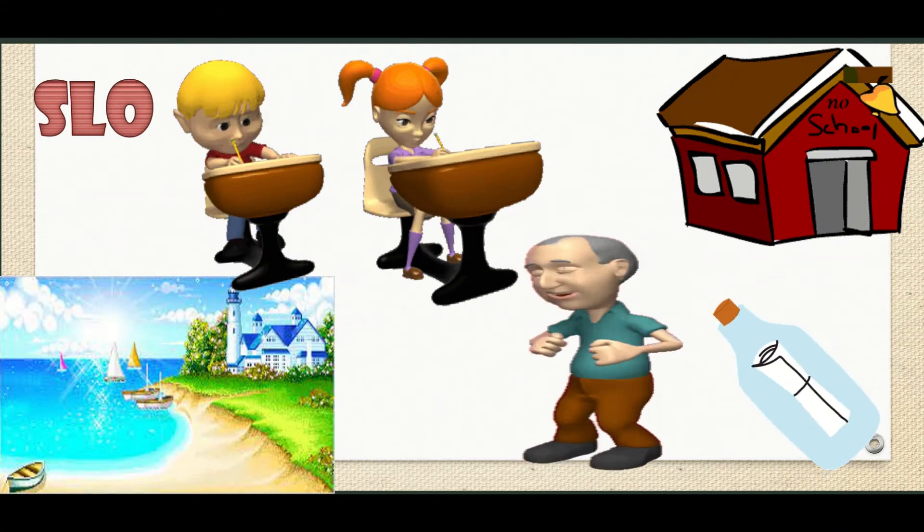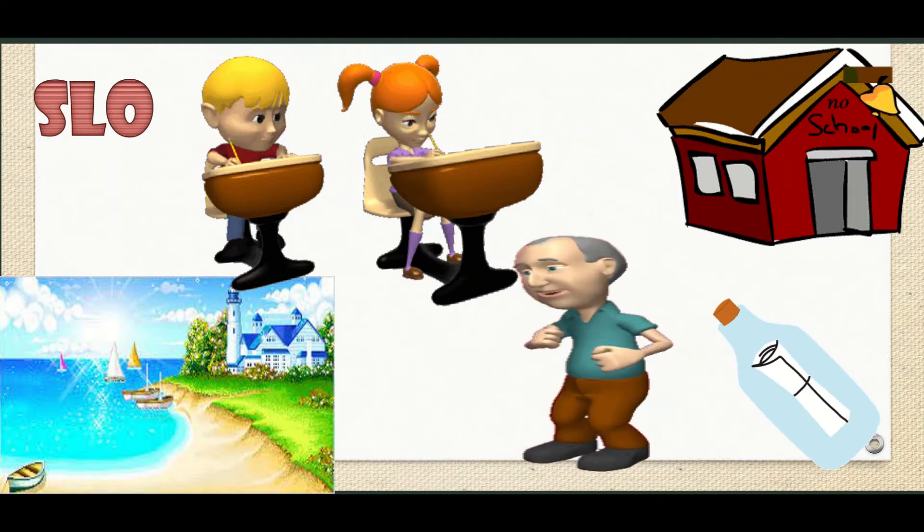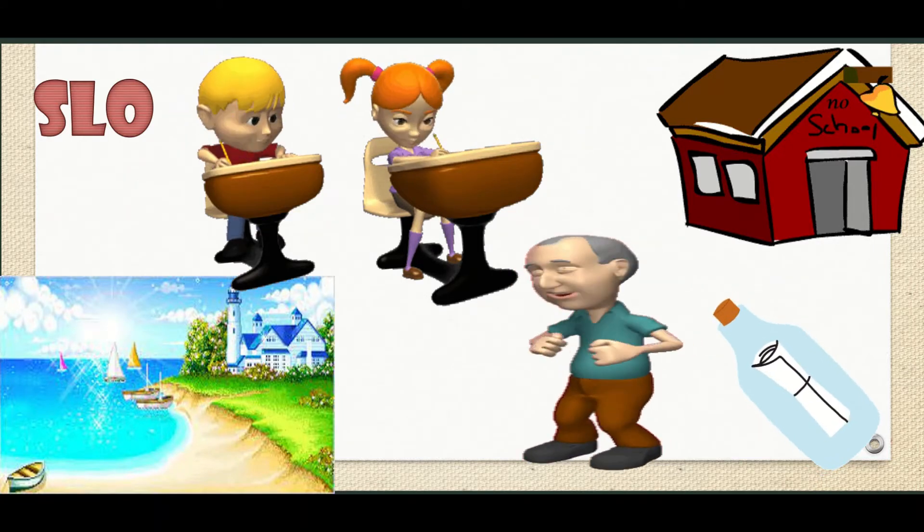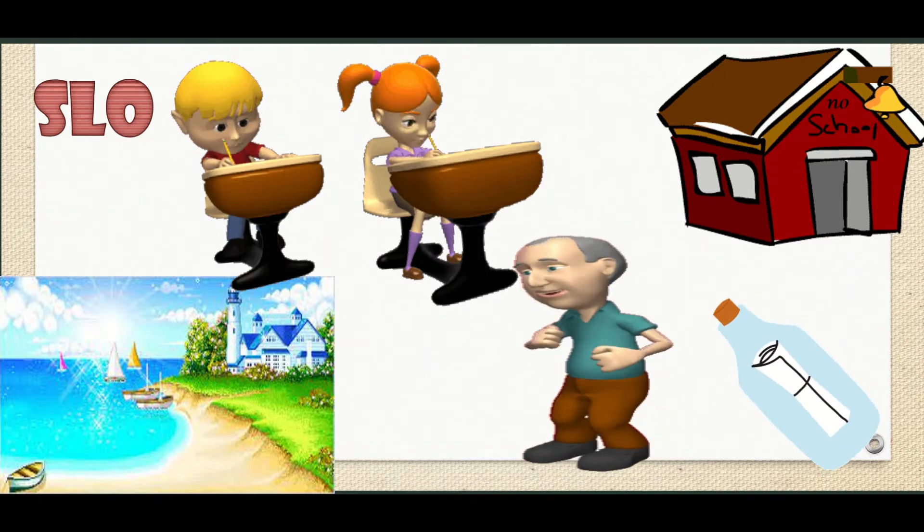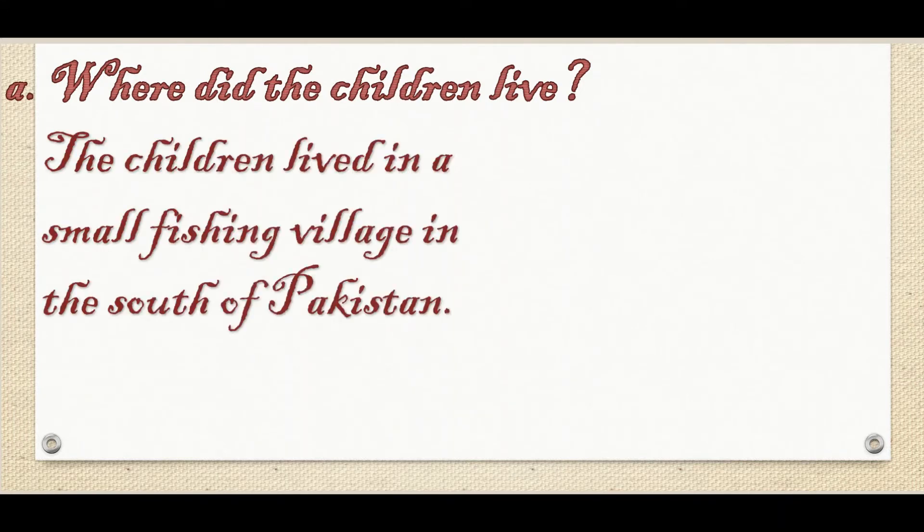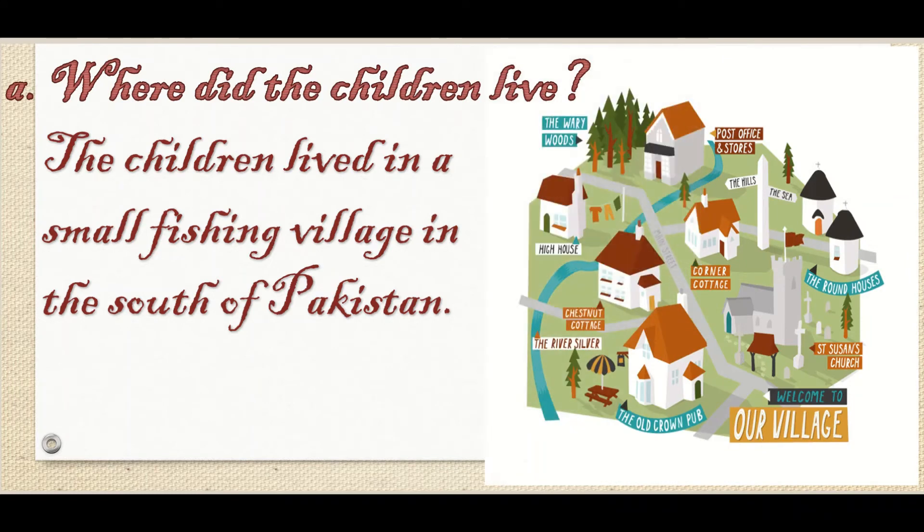But the old man, the shopkeeper Old Babu, taught them how to read and write. Okay, now let's move on. Let's discuss question answers. First question is part A: Where did the children live? I just mentioned everybody. Yes, the children lived in a small fishing village in the south of Pakistan.